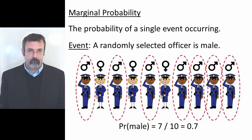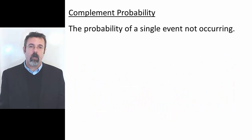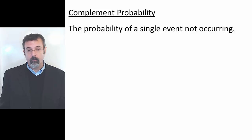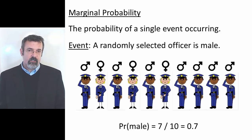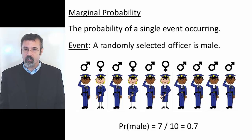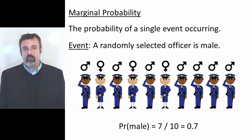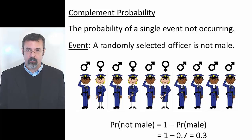A complement probability is the probability of an event not occurring. For example, if the event is that we randomly select a male officer, the probability of the event occurring is 70%, and the complement of the probability of the event occurring is 1 minus 70%.